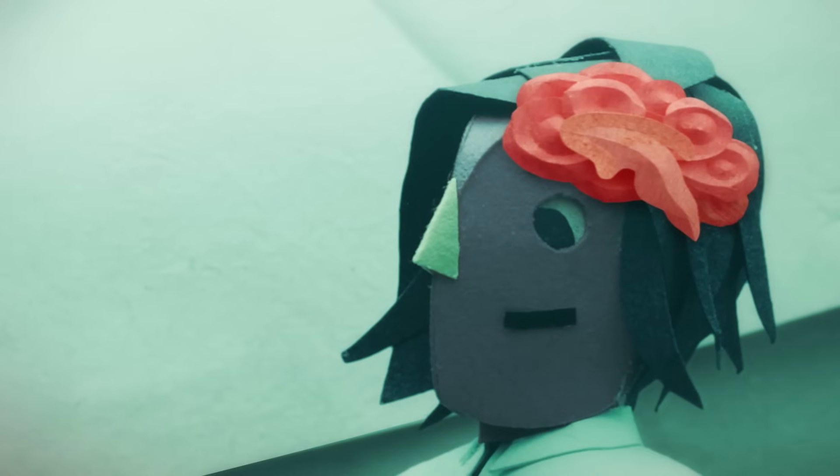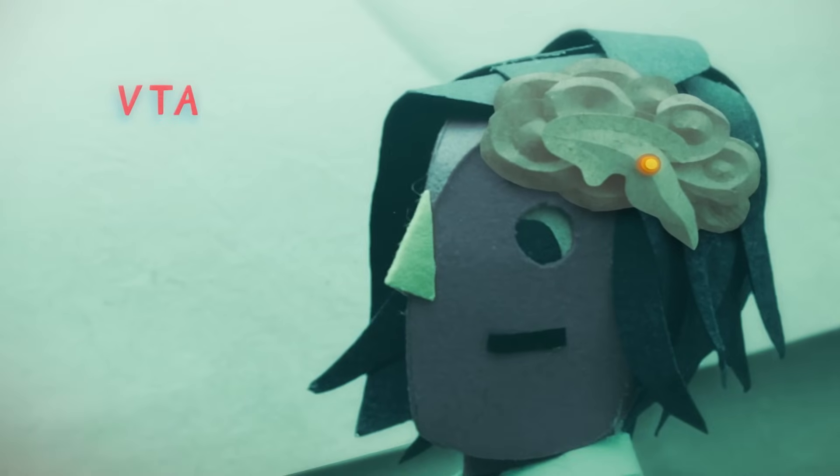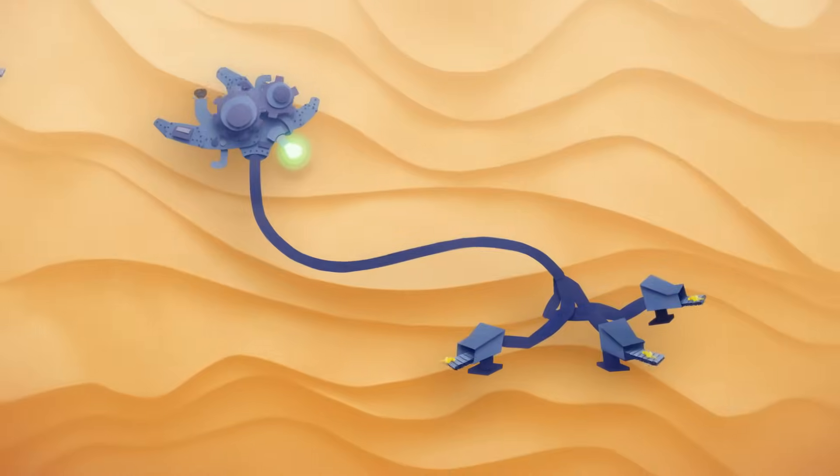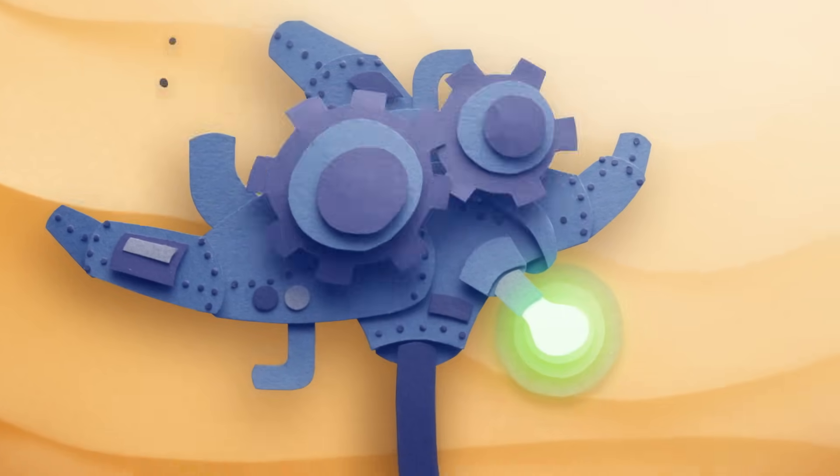Deep inside Susan's brain is a region called the ventral tegmental area, or VTA for short. The VTA is full of neurons that produce a chemical called dopamine. When something good happens, dopamine is released, giving Susan a feeling of pleasure.